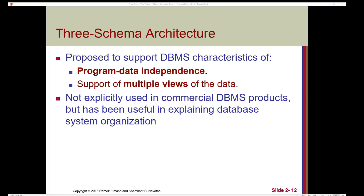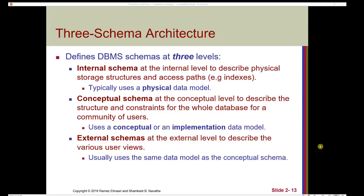When communicating about the representation of data in a database, we often talk about a three-schema architecture. While not explicitly used in commercial DBMS products, it has been useful in explaining database system organization. It supports program-data independence and multiple views of the data. The three-schema architecture defines DBMS schemas at three levels: the internal schema describes physical storage structures and access paths using a physical data model; the conceptual schema describes the structure and constraints for the whole database for a community of users; and the external schema describes the various user views.